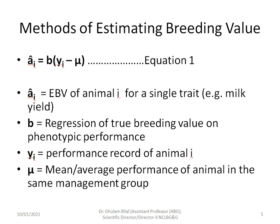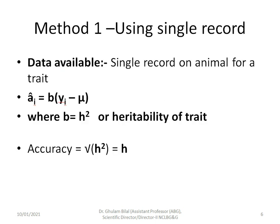Regarding methods of estimating EBVs, here is a general equation: â_i (predicted or estimated breeding value) = B × (y_i − µ), where â_i is the EBV of animal i for a single trait such as milk yield, B is the regression of true breeding value on phenotypic performance, y_i is the performance of animal i, and µ is the herd mean or overall average performance of animals in the same management group.